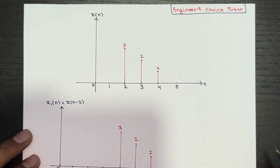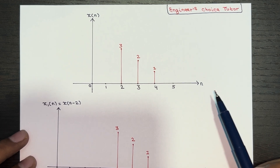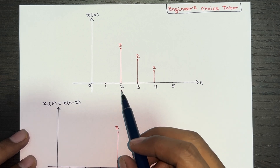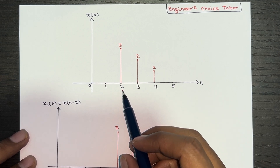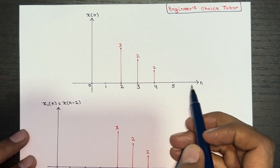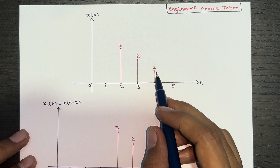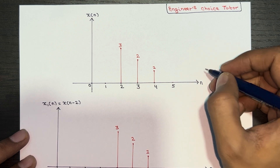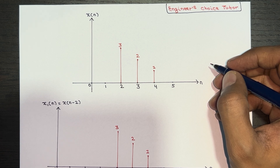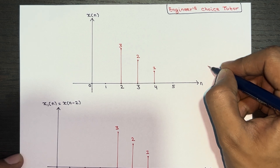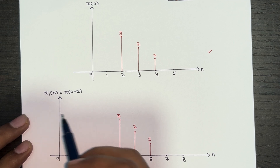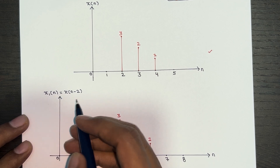This is our original signal. We've already seen the functional representation: at n equals 2, the value of X of n is 3; at n equals 3, the value is 2. This is the normal, original signal.